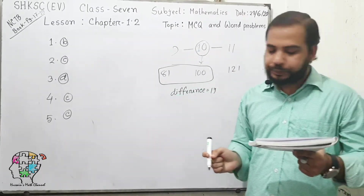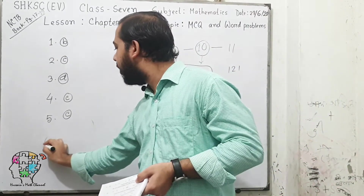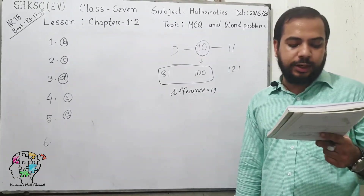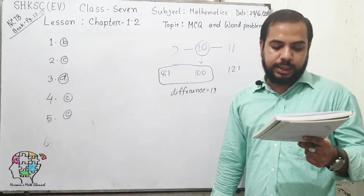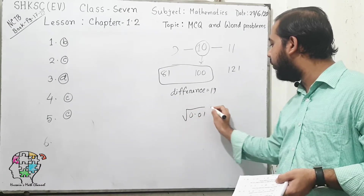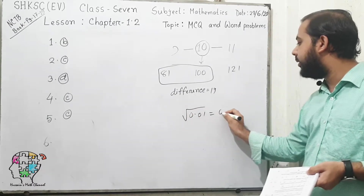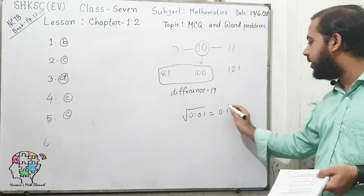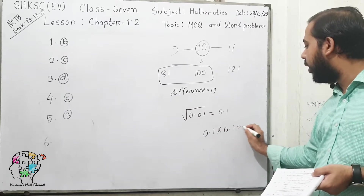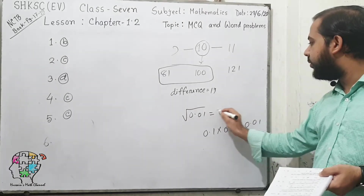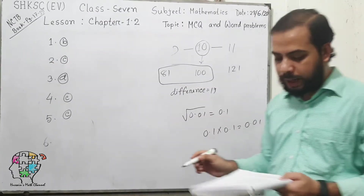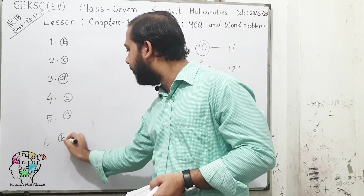Question number 6: which of the following is the square root of 0.01? The square root of 0.01 will be 0.1, because if we multiply 0.1 times 0.1, we will get 0.01. So the answer is option B.